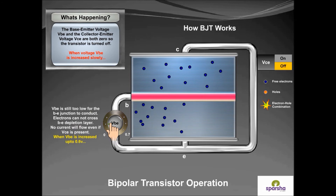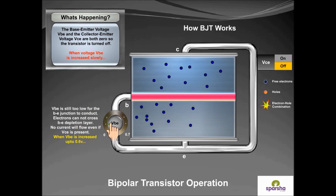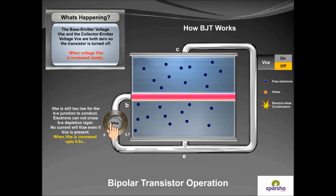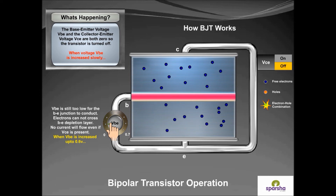VBE is still too low for the BE junction to conduct. Electrons cannot cross the BE depletion layer. No current will flow, even if VCE is present.